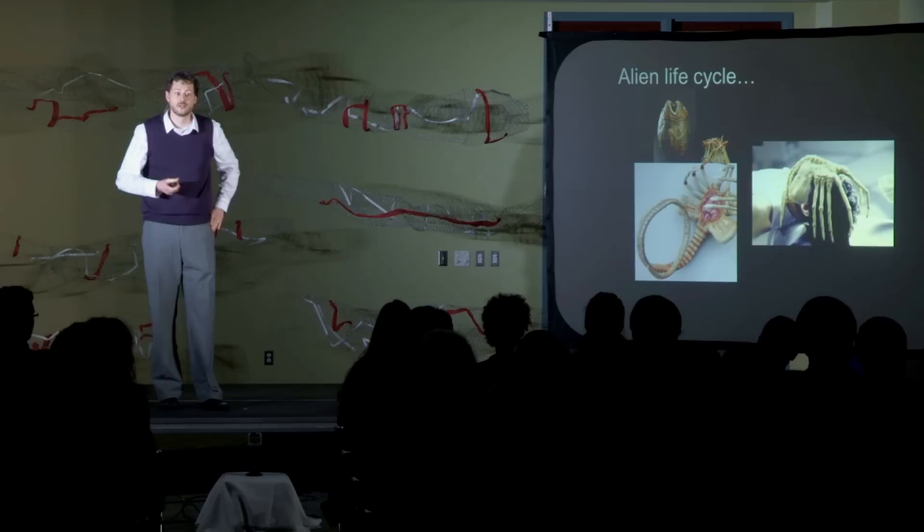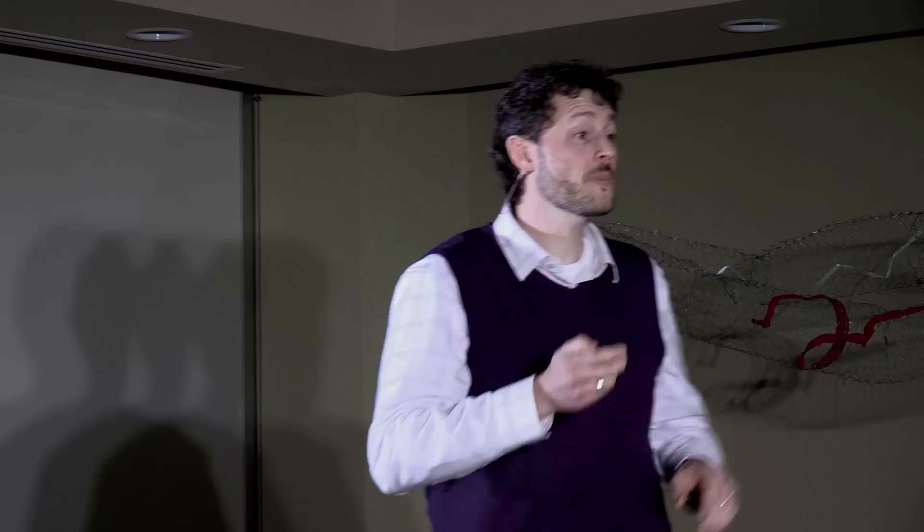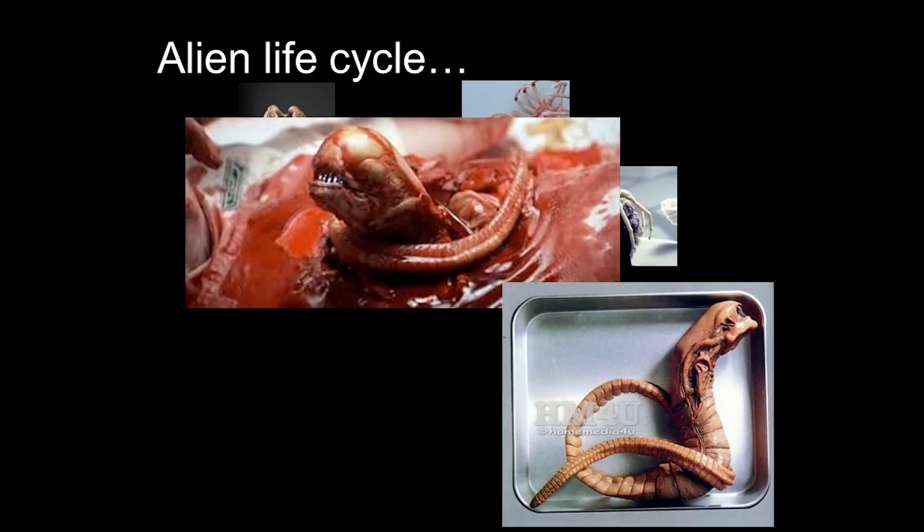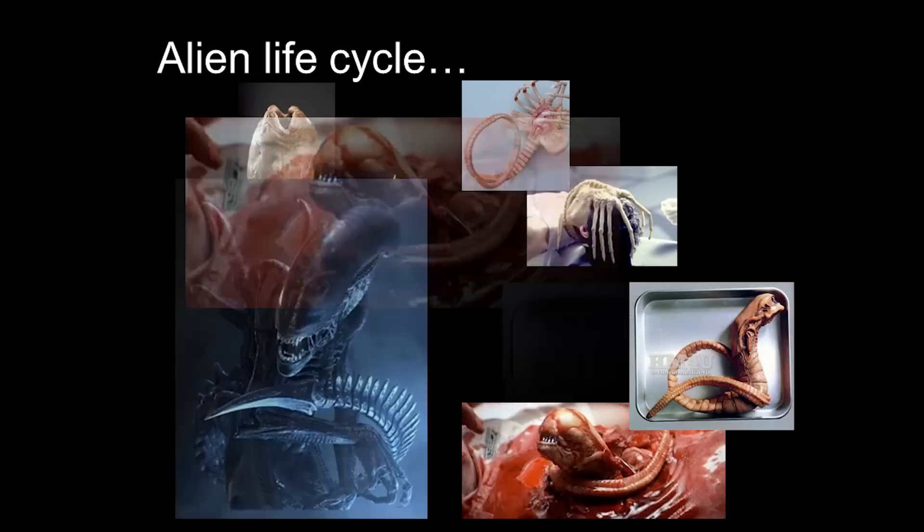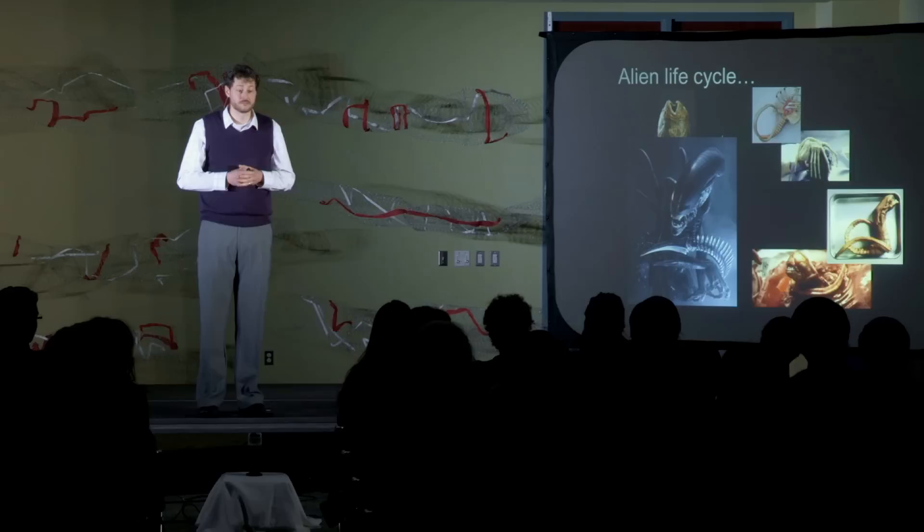This is the warning slide, because we're getting in some gore next. This parasitizes the host. The next stage in the life cycle is the chest buster. Very, very aptly named. It develops inside the human host and busts out of the chest cavity. And then, soon develops into the adult alien that we know and love.